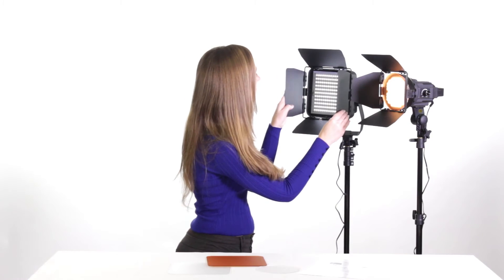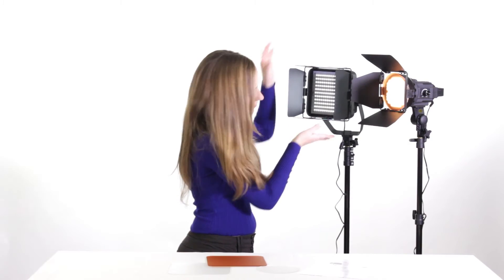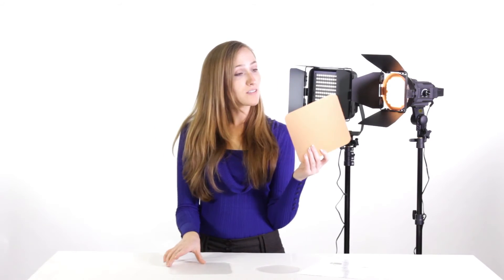This light can be modified with the included barn doors, or with the tungsten and translucent filters.